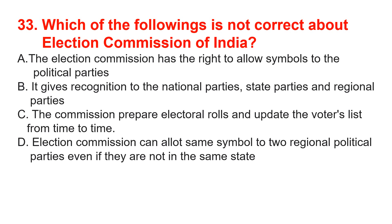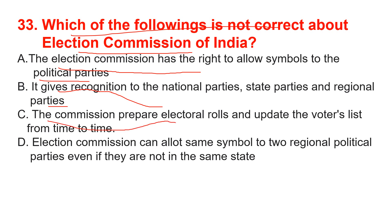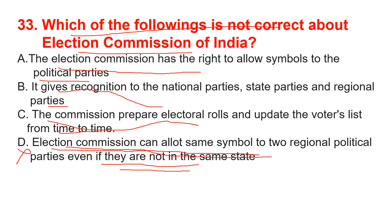Which of the following is NOT correct about the Election Commission of India? The Election Commission has the right to allow symbols to political parties (correct), gives recognition to national, state and regional parties (correct), prepares and updates electoral rolls (correct). However, the statement that the Election Commission can allot the same symbol to two regional parties even if they are not in the same state is incorrect — the Election Commission cannot do this. So option D is the correct answer.